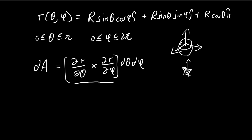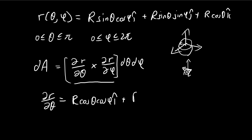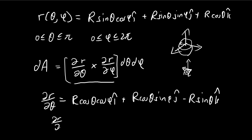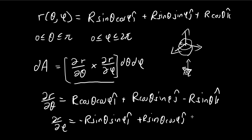Now let us concern ourselves with taking the cross product of this expression. First of all, we need to take the partial derivative with respect to theta, and we need to take the partial derivative with respect to phi. There are no phi components in the theta partial, so that term is just 0.